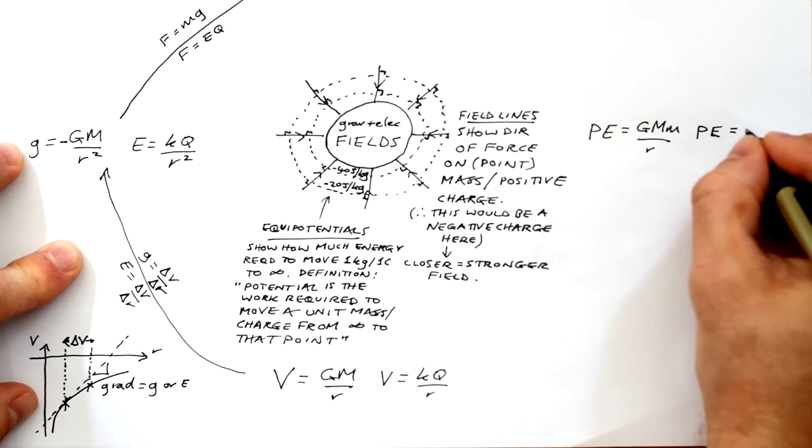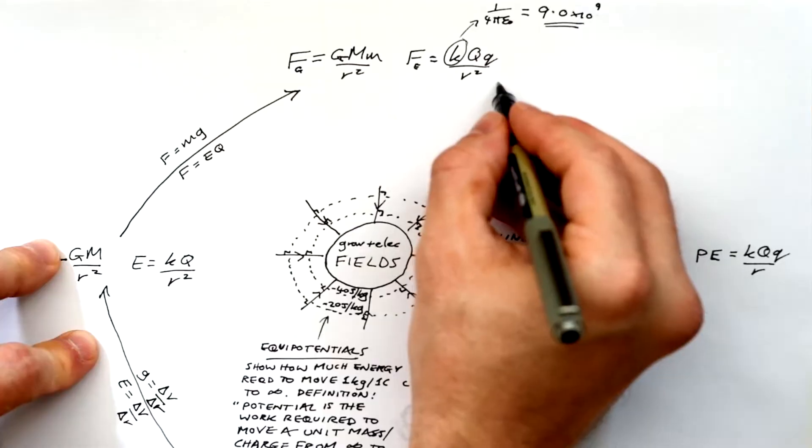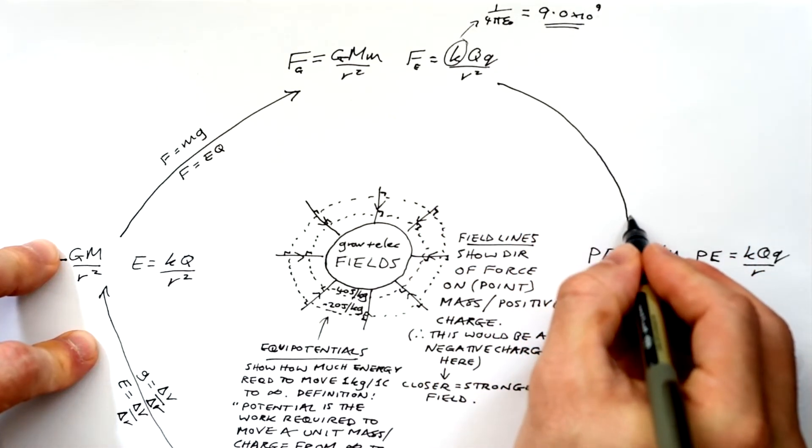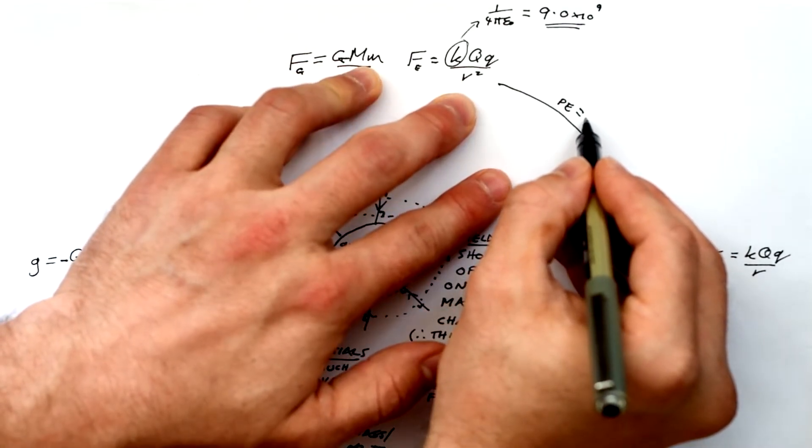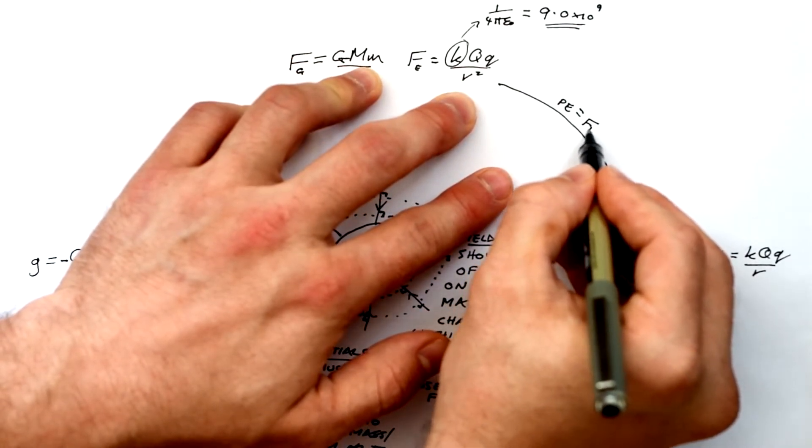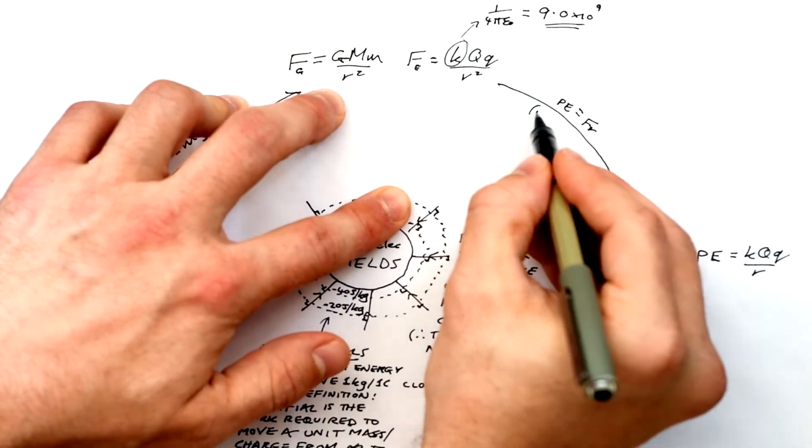Right. Potential energy for a gravitational field is GMm over r. And for electric field kQq over r. The only difference between these and the equations for force is that we are timesing by a distance. And actually, if you think about it, because of work done, energy or work done equals force times distance. So that's how we get from one to the other.